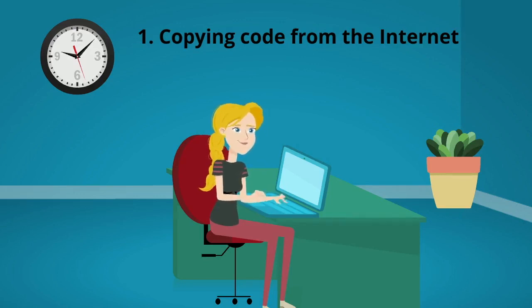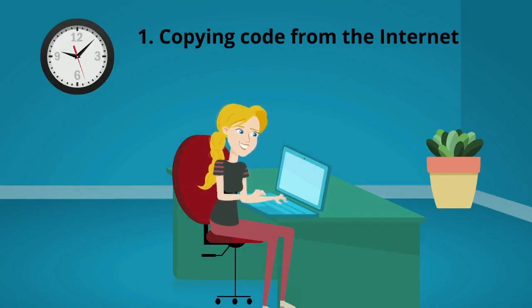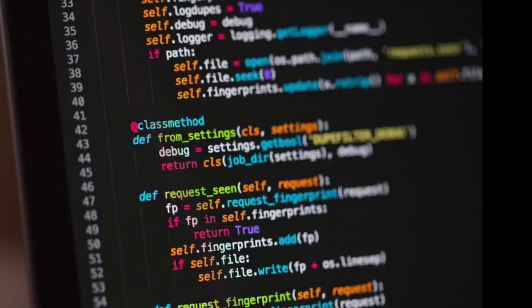If you want to use code from the internet, ask your professor. If you want to use anything the professor has posted, ask permission first. Once you have confirmed that code from these sources is okay to use, make sure to properly explain the code in your own words so that the professor knows that you fully understand the code you copied. Also, be sure to cite it properly.